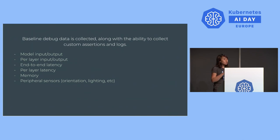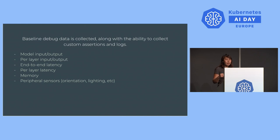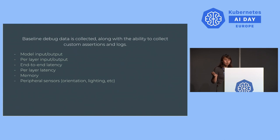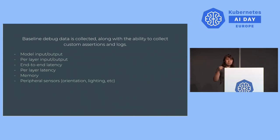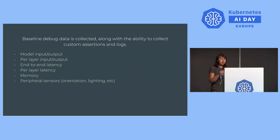Memory is especially important as you're moving to edge devices that have lower memory and compute resources. In the Android API it also collects peripheral sensor information like the orientation of the phone and the lighting detected in the room, providing more context to the running model. You can also add your own custom log fields and write custom assertions, which I'll talk about in a little bit.